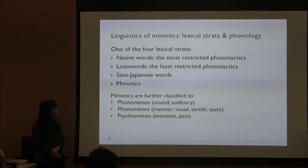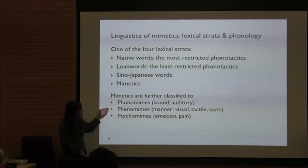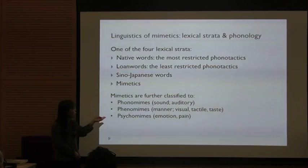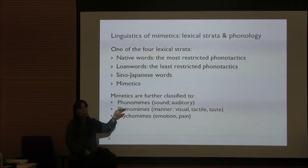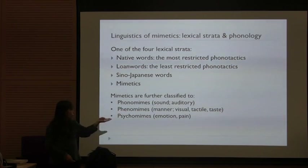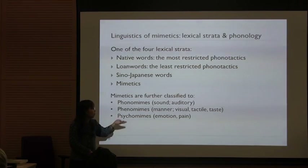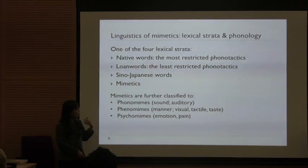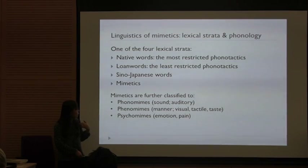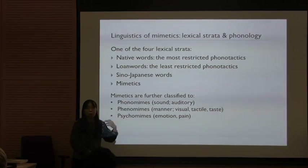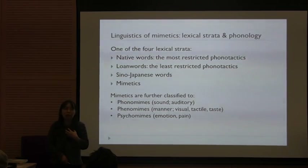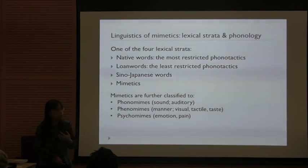Within mimetics, they are typically divided into three types depending on what they refer to. Phonomimes are the ones that refer to sound. Phenomimes refer to more visual, tactile, or other sensation, and manner is also often described by phenomimes. Psychomimes refer to psychological state, pain, and also emotion.